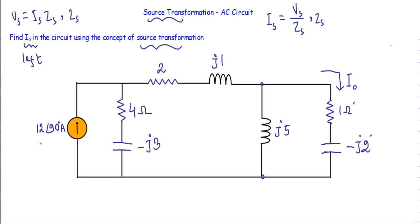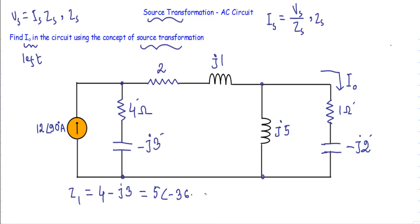I will start simplification from the left portion of the circuit. We have a current source of 12∠90° and a branch containing a resistor of 4 ohm and a capacitive reactance of minus J3. I'll indicate this branch impedance as Z1, so Z1 equals 4 minus J3, which in polar form is 5∠−36.87°. I have impedance Z1 in parallel with current source I1, which means I can convert this current source to a voltage source.